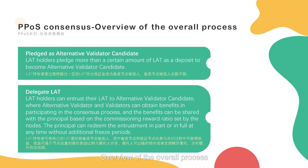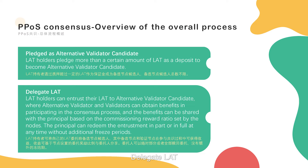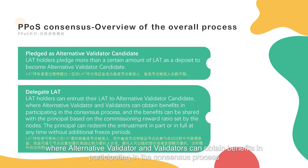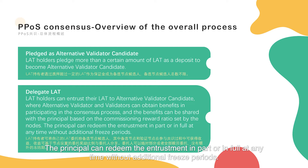Overview of the overall process. First, pledging as an alternative validator candidate: lot holders pledge more than a certain amount of lot as a deposit to become an alternative validator candidate. Second, delegating lot: lot holders can entrust their lot to alternative validator candidates, where alternative validators and validators can obtain benefits in participating in the consensus process. These benefits can be shared with the principal based on the commissioning reward ratio set by the nodes. The principal can redeem the entrustment in part or in full at any time without additional freeze periods.